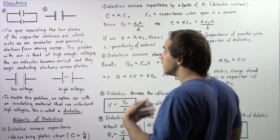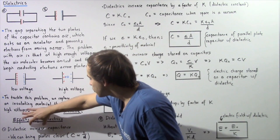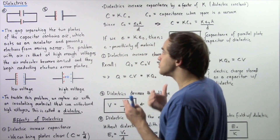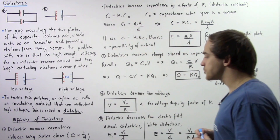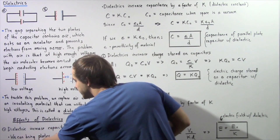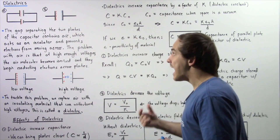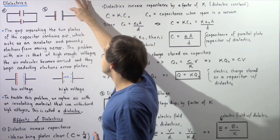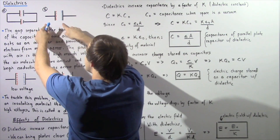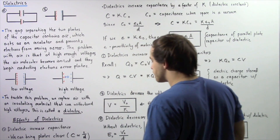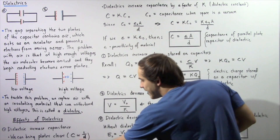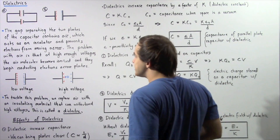One thing that a dielectric does to a capacitor is it increases the capacitance — it increases the quantity of electric charge that can be stored on either one of the plates. There are two ways we can increase capacitance. One way is to bring the plates closer together. With a thin sheet of dielectric between the plates, we can decrease the distance between them. Because capacitance is inversely proportional to distance, decreasing the distance increases the capacitance.